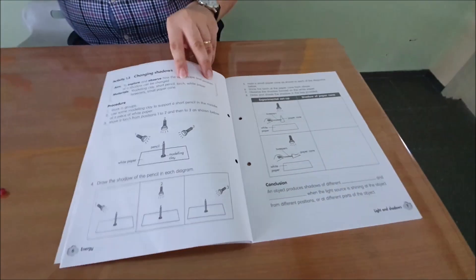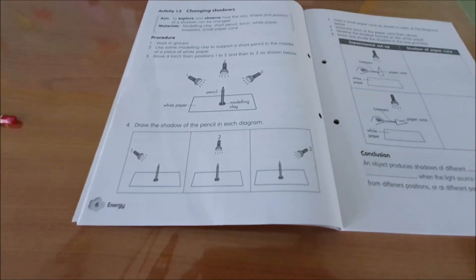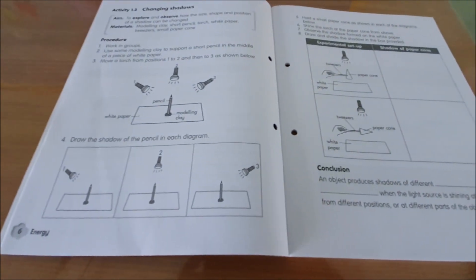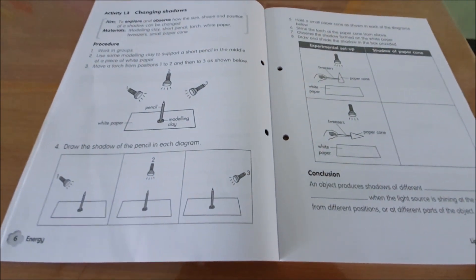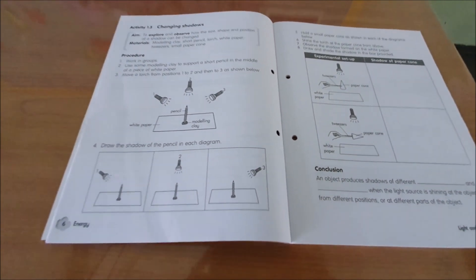Let's turn to page 6 and 7, activity 1.3 on changing shadows. There are two experiments that I'm going to demonstrate to you and this is the first one.